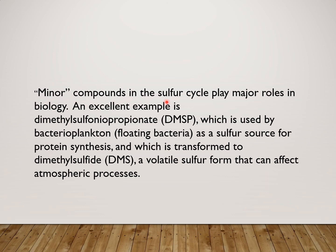Minor compounds in the Sulphur cycle play a major role in biology. An excellent example is Dimethylsulfoniopropionate (DMSP), which is used by bacterioplankton as a Sulphur source for protein synthesis and which is transformed into dimethylsulfide — a volatile Sulphur form that can affect the atmosphere.